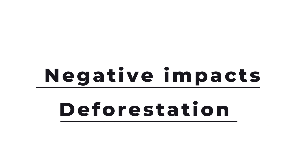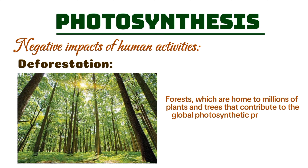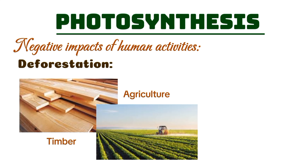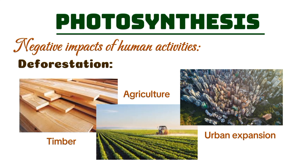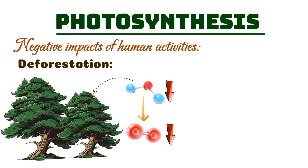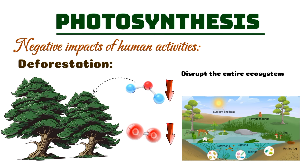One of the most significant negative impacts of human activity on photosynthesis is deforestation. Forests, which are home to millions of plants and trees that contribute to the global photosynthetic process, are being cleared at alarming rates. As trees are cut down for timber, agriculture, or urban expansion, we lose a vital carbon sink. Without these trees, less carbon dioxide is absorbed from the atmosphere, reducing oxygen production. This deforestation not only diminishes the number of photosynthetic organisms, but also disrupts entire ecosystems that rely on plants for survival.